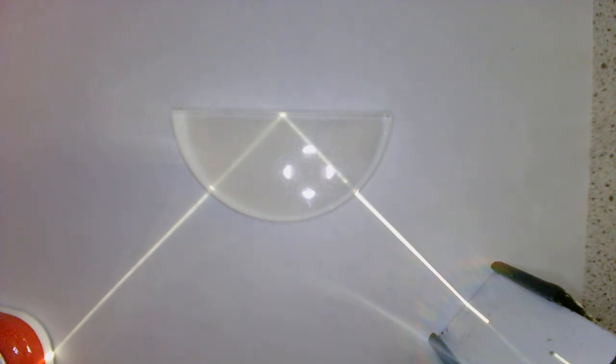So in order to get TIR we need the angle of incidence to be bigger than the critical angle. So it needs to be in this case bigger than 42 degrees. Now the other thing I want to show you is you have to be trying to go from high refractive index to low refractive index.